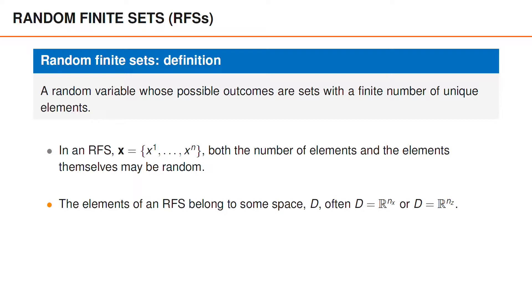Of course, the space D is not the same for all random finite sets. For instance, if the elements represent object states, D would be a Euclidean space of dimension nx, where nx is the length of the state vectors. And if the elements in the set represent measurement vectors, capital D would be a Euclidean space of dimension nz, where nz is the length of the measurement vectors.